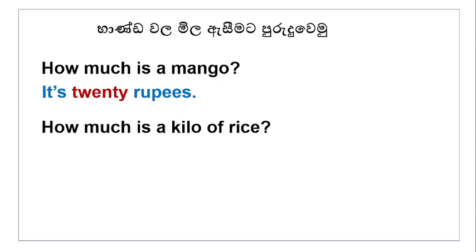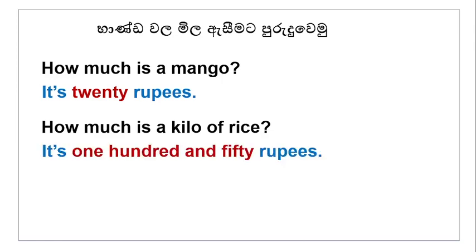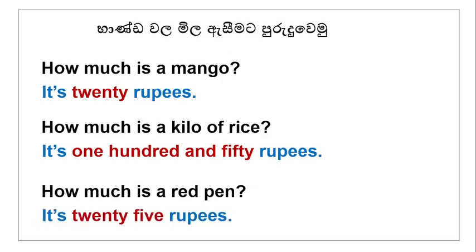How much is a kilo of rice? Hal kilo eka kee yada — how much is a kilo of rice? It's one hundred and fifty rupees — rupee al leka siya paana hai. How much is a red pen? Ratu pen akki yada — it's twenty-five rupees — rupee al visya paana hai. How much is a mango? It's twenty rupees. How much is a kilo of rice? It's one hundred and fifty rupees. How much is a red pen? It's twenty-five rupees.